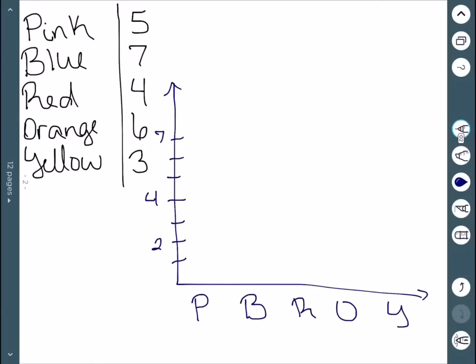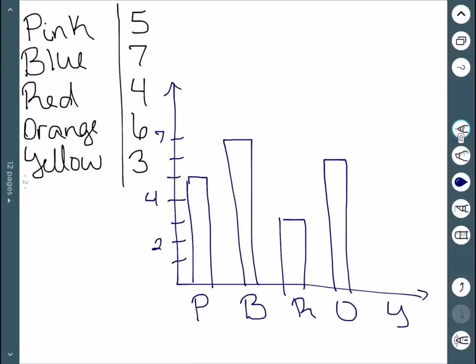So whenever we're graphing these, pink was 5, so we just go up to 5 and draw a bar. Blue was 7, so we go up to 7. Red was 4. Orange was 6. And then yellow was 3. So here's our bar graph.